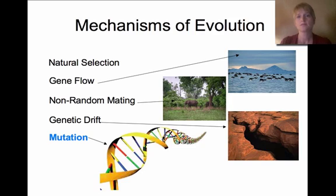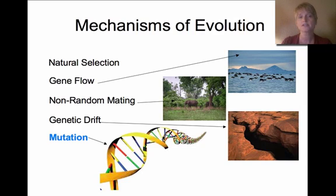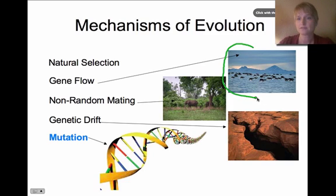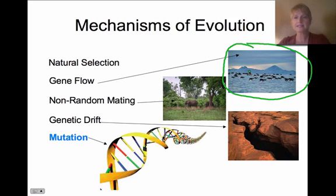Evolution is change over time, specifically changes in genetics. Natural selection causes changes in genetics, but gene flow will also cause changes in genetics. The best example of gene flow is migration — individuals coming into or leaving a population will change the genetics of that population.